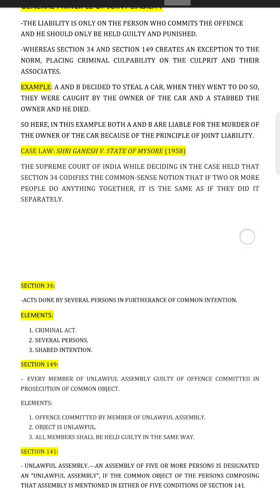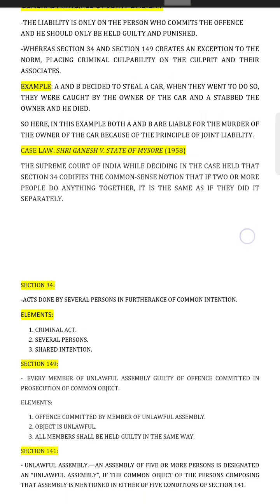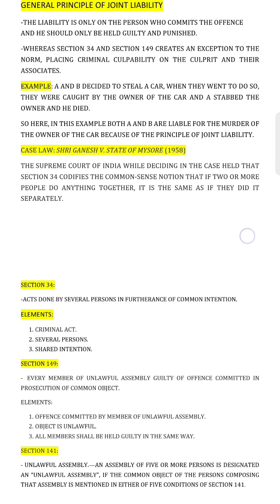Where the object is unlawful, all members shall be held guilty in the same way. Under Section 149, an assembly of five or more persons is designated as an unlawful assembly if the common object of the persons composing that assembly falls under any of the five conditions mentioned in Section 141.